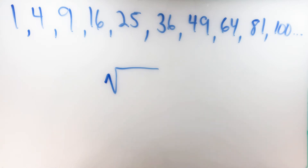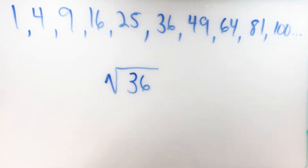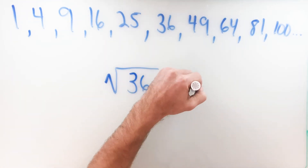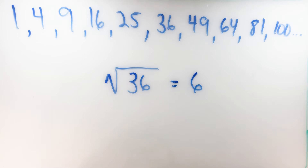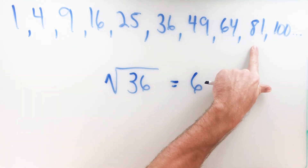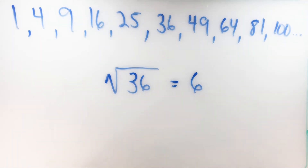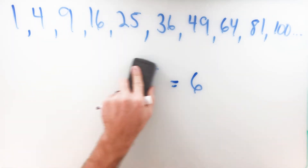A square root is a number that when multiplied by itself gives the desired quantity. For example, the square root of 36 means: what number multiplied by itself would get you to 36? We know the square root of 36 is 6, because 6 times 6 is 36. So squares and square roots are inverses of each other, and each one of these perfect square numbers has a whole number root.